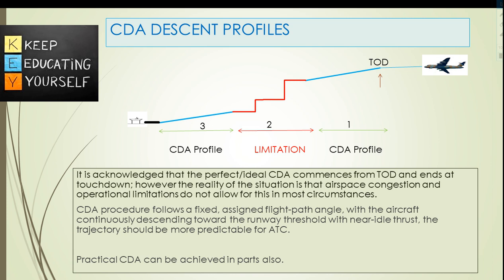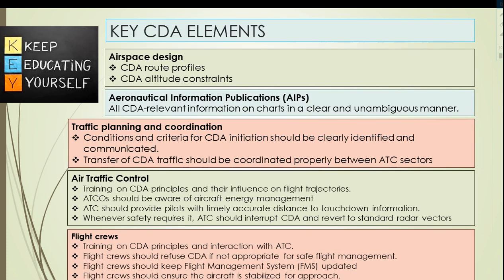However, the reality is that airspace congestion and operational limitations do not allow for this in most circumstances. The CDA procedure follows a fixed assigned flight path angle with the aircraft continuously descending toward the runway threshold with near-idle thrust. CDA can be achieved in parts also; initial CDA operations may be interrupted due to some constraints, but after that CDA is resumed. CDA profiles are more predictable for ATC.